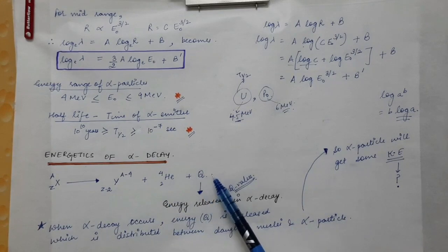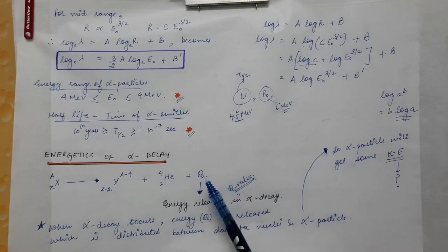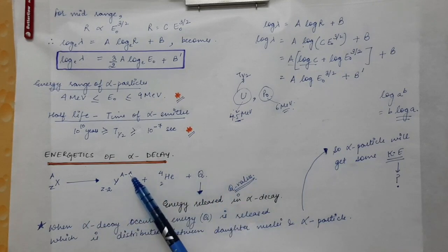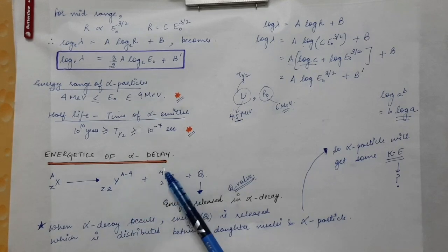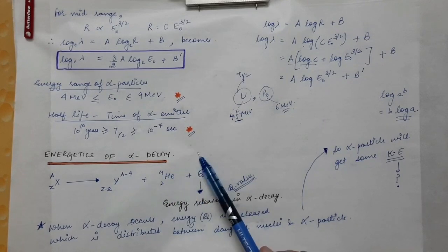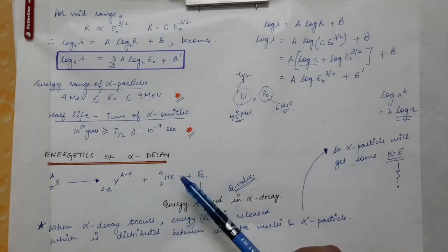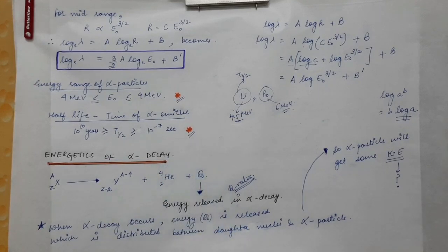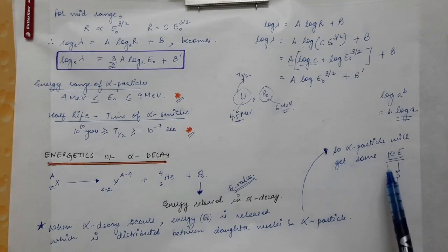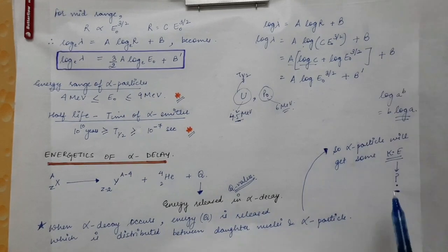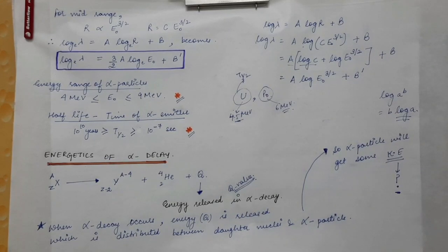The Q value — the total energy released during the decay — is distributed between the daughter nucleus and the alpha particle as kinetic energy. We will find the expression for the kinetic energy imparted to the alpha particle.